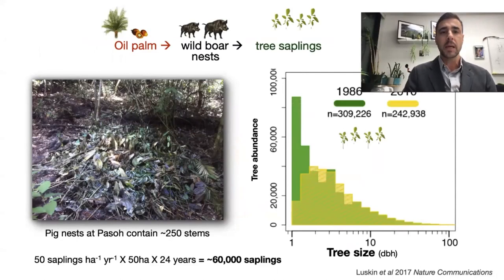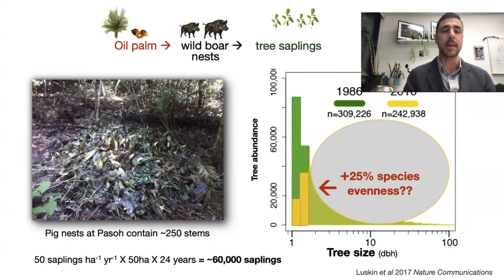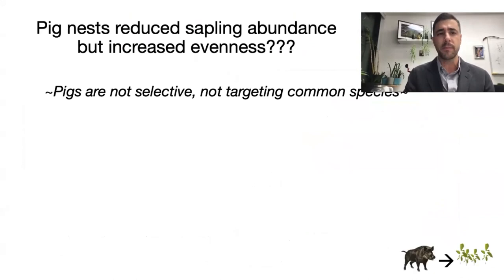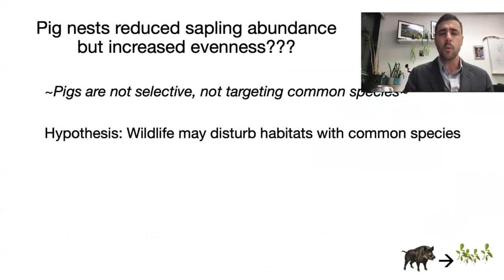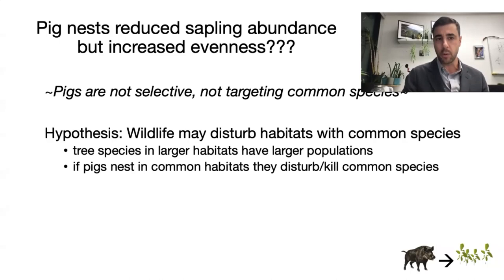In a previous study, we looked at the change in tree saplings over a 25-year period. We found a huge loss in tree sapling abundances between 1986 and 2010, but there was a 25% increase in species evenness. That really threw us and sent me down a rabbit hole trying to figure out what was going on. Pigs reduce sapling abundance but increase evenness. How is that possible if pigs are generally not selective and probably not targeting common species? What if wildlife disturb habitats that happen to have common species?